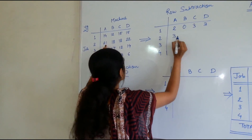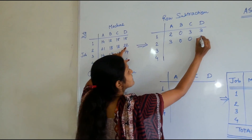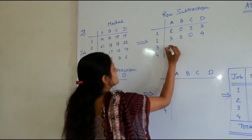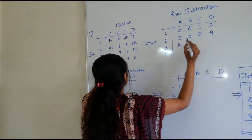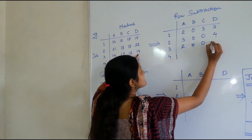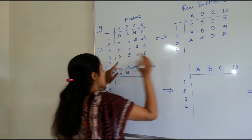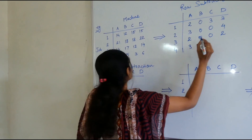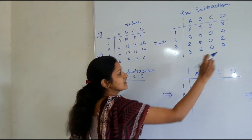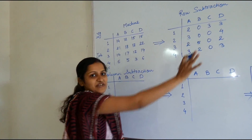Same thing for the third row — subtract the minimum: 14 minus 12 is 2, 17 minus 12 is 5, 12 minus 12 is 0, and 14 minus 12 is 2. For the fourth row the smallest number is 3: 6 minus 3 is 3, 5 minus 3 is 2, 3 minus 3 is 0, and 6 minus 3 is 3. Whatever matrix you get after this is known as your row subtraction matrix.